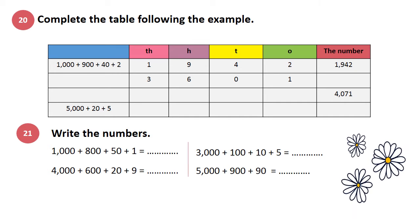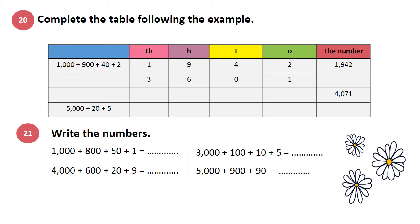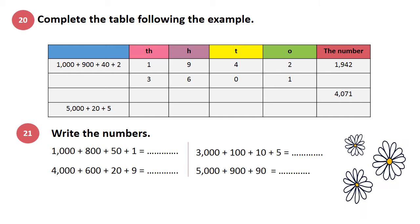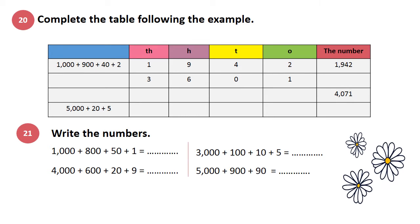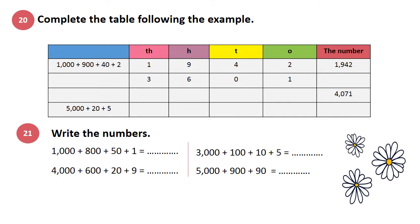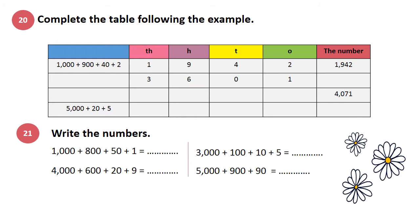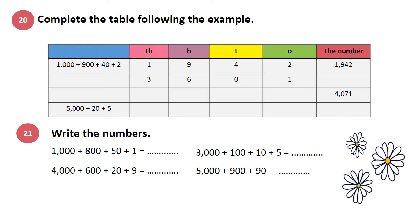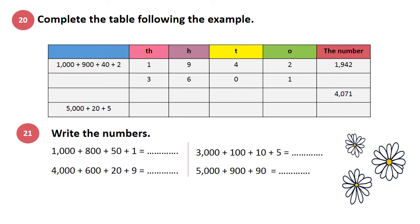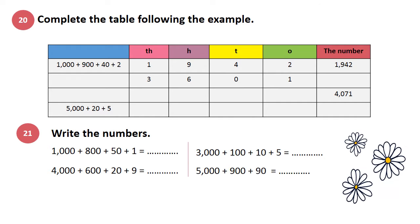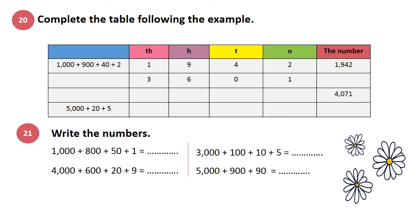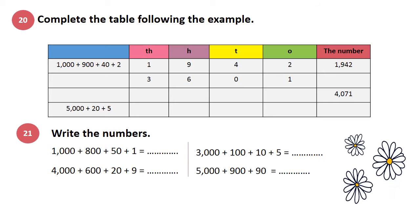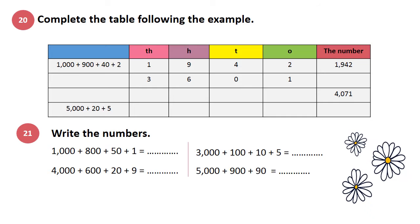Exercise 20: Complete the table following the example. 1000 plus 900 plus 40 plus 2. How many zeros are in 1000? 3 zeros. So I write 1 in the column TH which means 1000. Plus 900 — how many zeros in 900? 2. So I write 9 in column H which means 100. Plus 40 — how many zeros in 40? 1. So I write 4 in column T which means 10s. Plus 2 — 2 is staying alone, so I write 2 in column O which means 1s. The number I compose is 1,942.